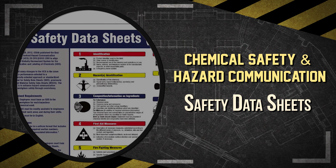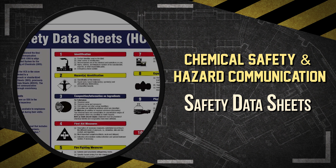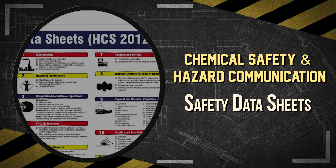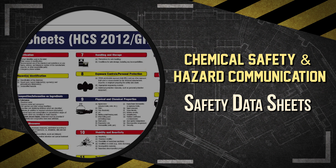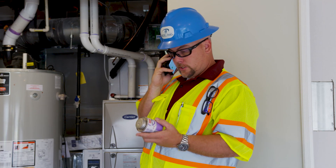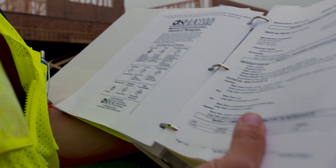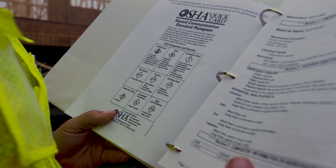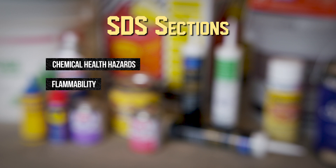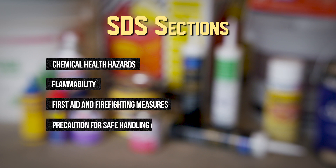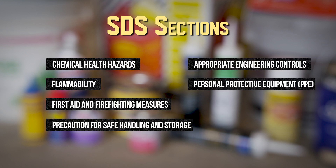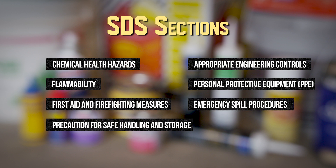SDS stands for Safety Data Sheet. Safety data sheets serve as the source of detailed information on a particular hazardous chemical. It's required that all product manufacturers and distributors provide safety data sheets to its users. If you didn't receive an SDS from your supplier, you should request one or visit their website to download it. SDSs have a uniform format and are divided into 16 sections, containing important information such as the chemical's health hazards and flammability, first aid and firefighting measures, precautions for safe handling and storage, appropriate engineering controls, and personal protective equipment or PPE needed, and emergency procedures for spills.